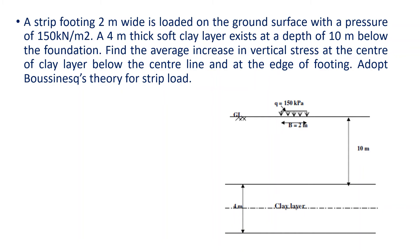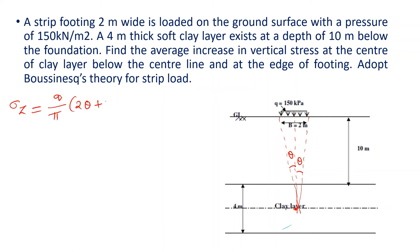The strip load is 10 meters wide. We need to find the stress below the center line and at the edge. For the center line, the equation is: σz = (q/π) × (2θ + sin 2θ), where θ is calculated from the geometry.